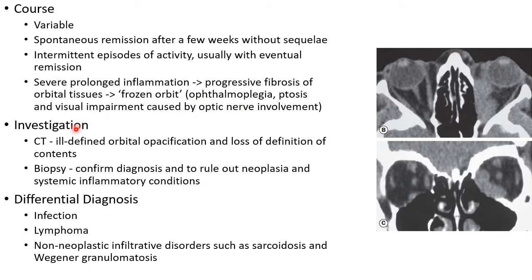CT scan can be done in IOID, which shows ill-defined orbital opacification and loss of definition of contents. CT images show both axial and coronal views demonstrating orbital opacification. Biopsy can be done to confirm the diagnosis and to rule out neoplasia and systemic inflammatory conditions.